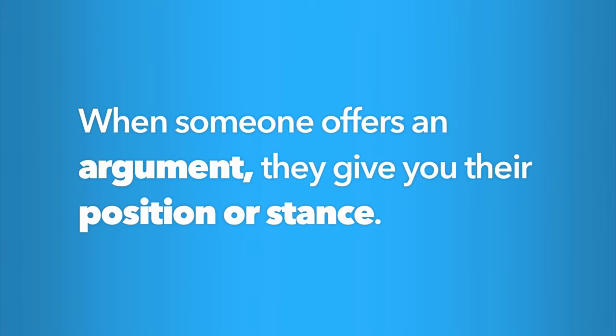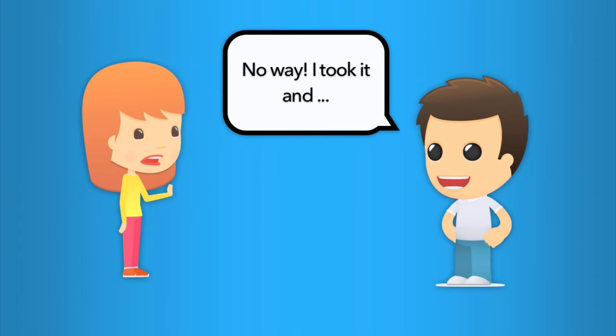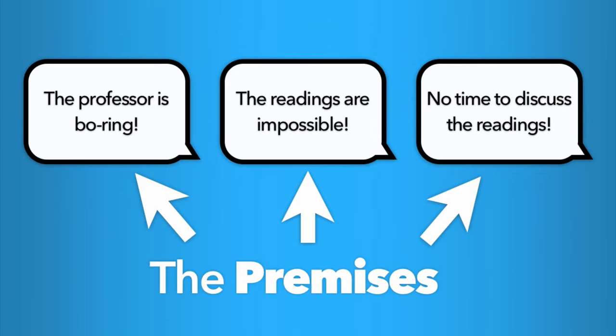Premises. When someone makes an argument, they are offering up their position or stance on some issue at hand. For example, imagine one of your classmates is currently taking a course you were thinking of signing up for next semester. When you ask if you should sign up, he says, oh no, no way, do not take Business 1050. In order to convince you that this is true, that you should not take Business 1050, he'll give you one or more reasons. He might tell you that the professor is boring, or that the readings are too hard, or that there's not enough time for discussion. The claims about the class are the premises of the argument. They provide the foundation on which the conclusion, that you should not take the class, rests.